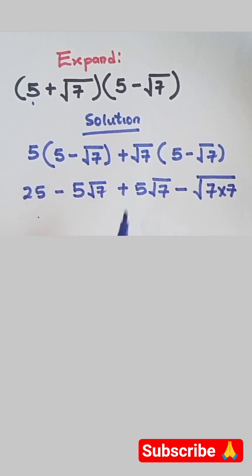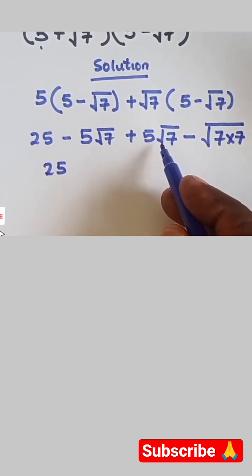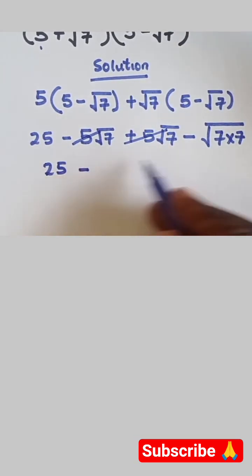Then we have 25 - 5√7 + 5√7 gives zero. So we cancel this, and we have...